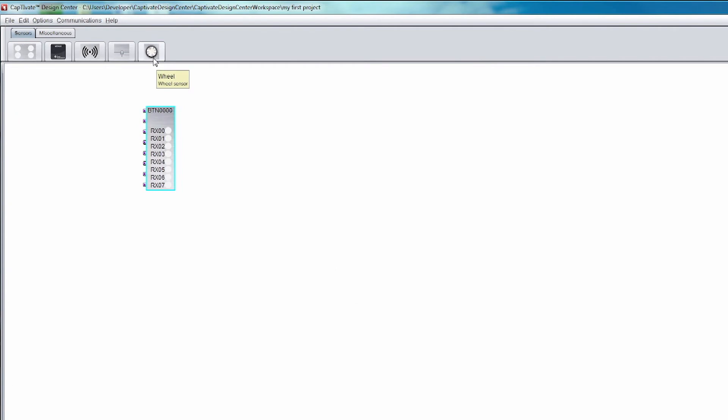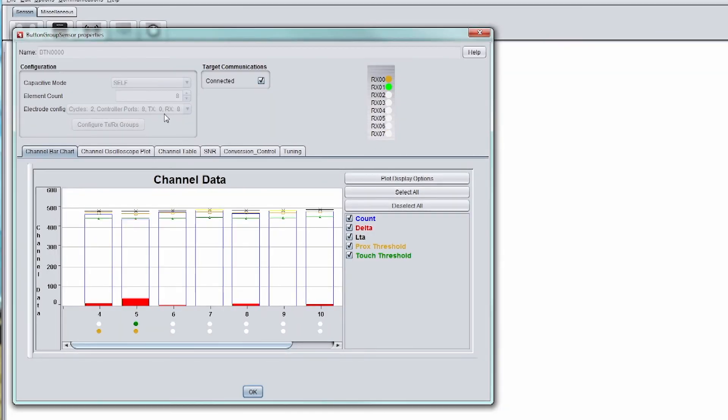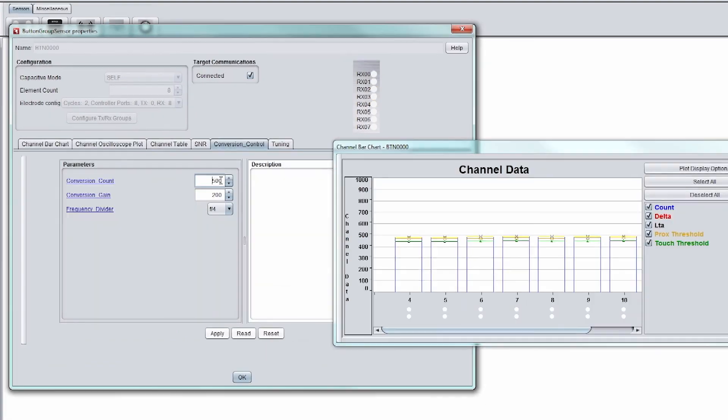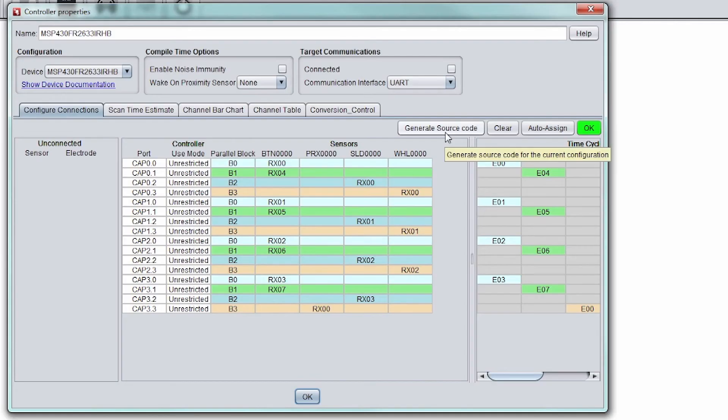Captivate MCUs come with comprehensive support and easy-to-use tools that enable rapid adoption of the capacitive touch parameter settings for the desired user experience. This includes the Captivate Design Center, a simple GUI that helps tune your sensors and generate source code in less than five minutes.